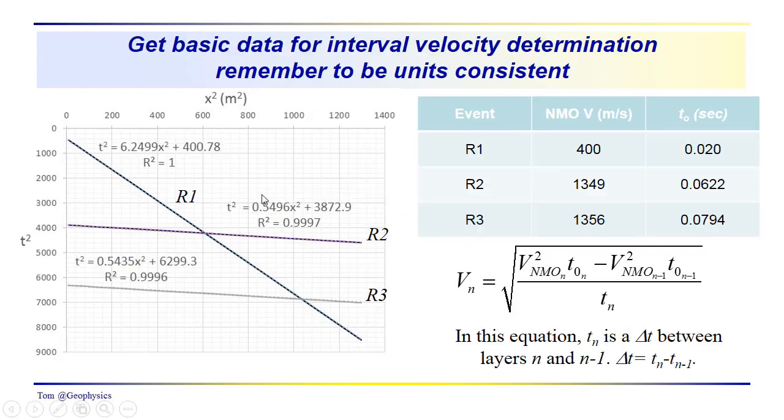So we go through this analysis, we take a look at the slope here, we calculate the NMO RMS velocity. We get NMO velocities of 400, 1349, 1356. We get our T0's of 0.02, 0.0622, 0.0794.